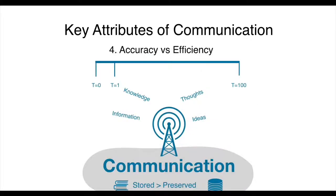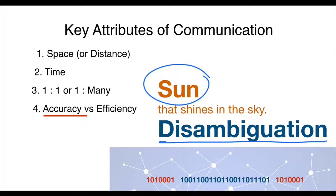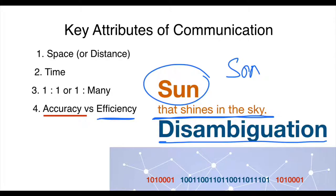Then we looked at the accuracy versus the efficiency of communication, and here we looked at the idea of disambiguation. When you have to convey the word 'sun,' to make sure that S-U-N doesn't get conveyed as S-O-N, you add certain extra information — for example, 'sun that shines in the sky.' This extra addition of information makes communication slightly inefficient, but we are okay with this because the inefficiency leads to accuracy.